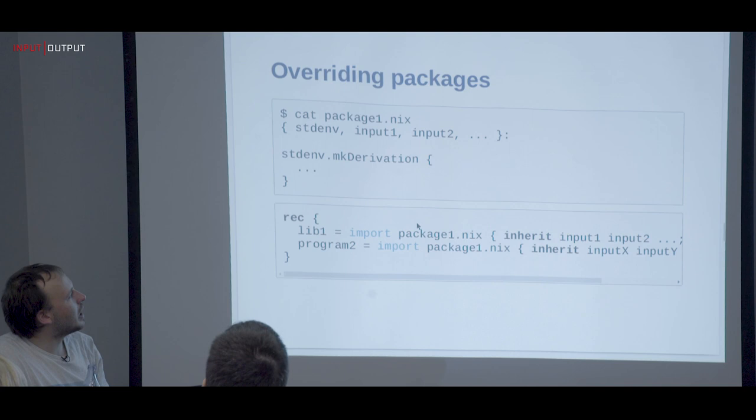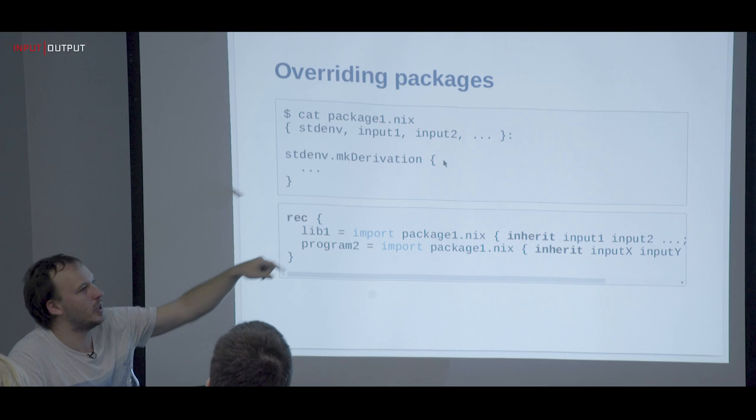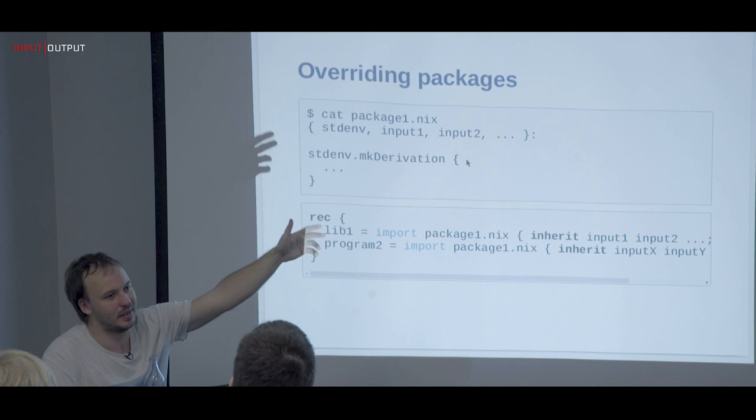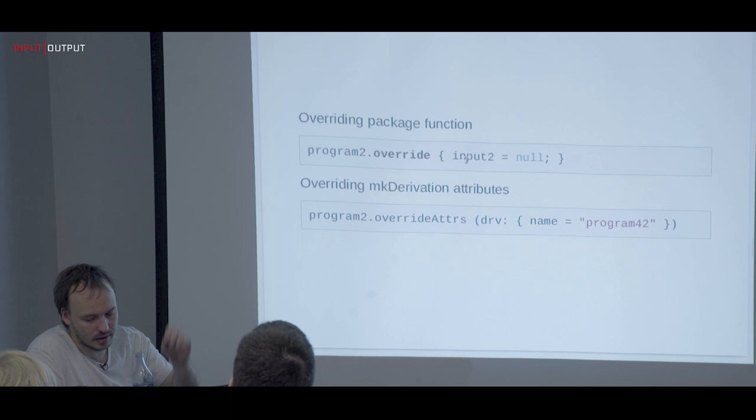`overrideAttrs` overrides the attributes passed to the main derivation — not the function inputs above, but the attributes passed to `mkDerivation` itself. So you can either override the function inputs or the derivation attributes, and in between you can do concatenation or other operations.